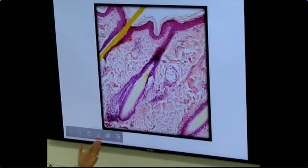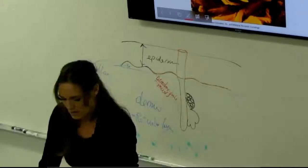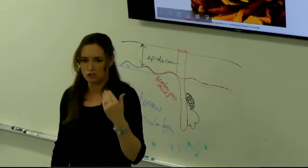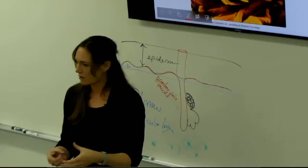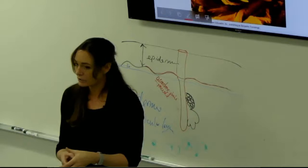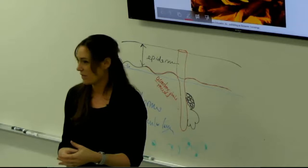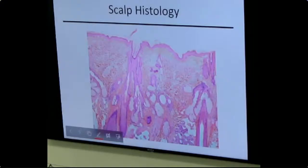In cross-section, follicles may appear oval or circular depending on slice angle. Hair close-up shows multiple concentric layers. Whether hair is straight or curly depends on the shape of the pore the hair comes out of. This can change with age or after chemotherapy — hair that grows back may be curlier or straighter because the pore shape has changed.